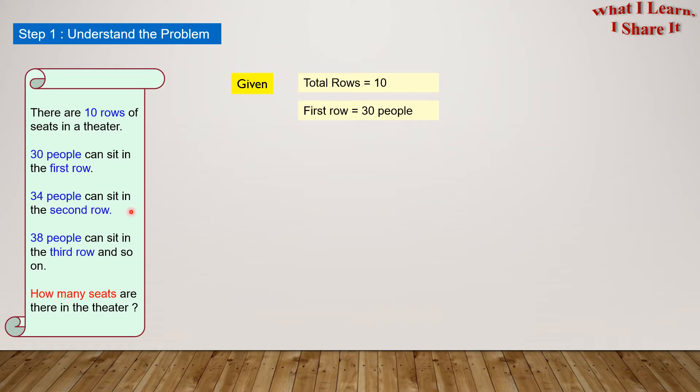Thirty-four people can sit in the second row. In our own words, we can write second row equals 34 people. Thirty-eight people can sit in the third row, and so on. So, in our own words, we can write third row equals 38 people.